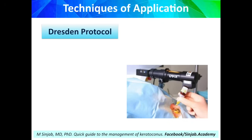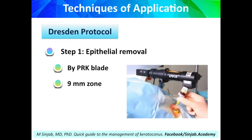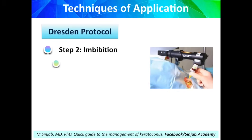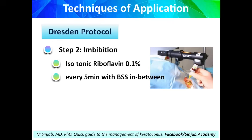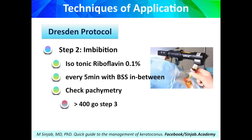The most agreed protocol till now is the Dresden protocol. Step 1: epithelial removal. The epithelium should be removed from over a 9 mm zone. It can be removed by a PRK blade, alcohol, or other means. Step 2: isotonic riboflavin 0.1% should be instilled every 5 minutes with BSS in between, and at the end of 30 minutes, we have to check pachymetry. If it is over 400 microns without epithelium, then we go to step 3.